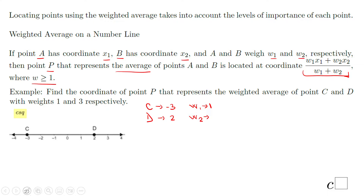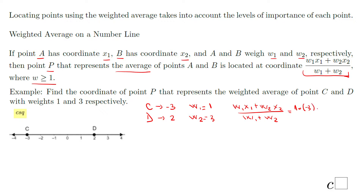So I'm going to use the formula I just mentioned. We're going to have W₁ times X₁ plus W₂ times X₂ over W₁ plus W₂. So we get 1 times negative 3 plus 3 times 2 over 1 plus 3. We have 1 times negative 3, that is negative 3, plus 3 times 2 is 6, over 1 plus 3 is 4. And we have negative 3 plus 6 is 3, so 3 over 4.